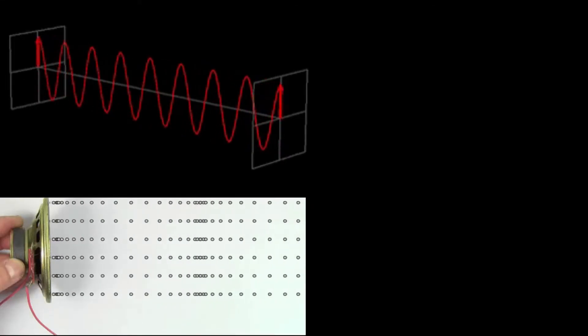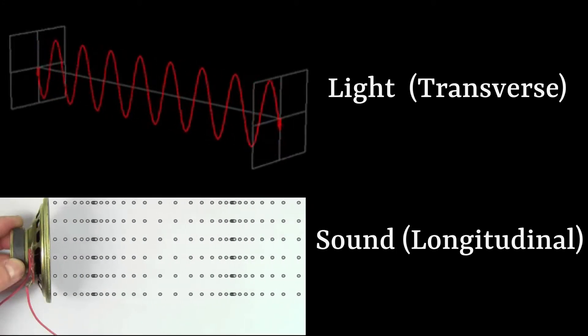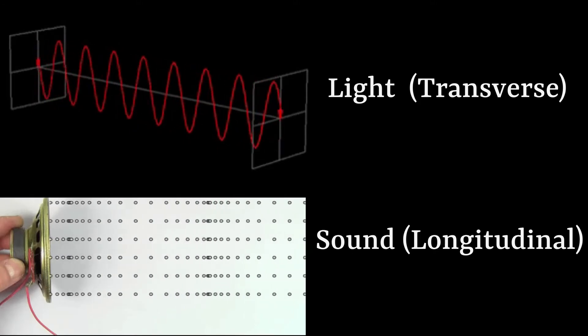Everything around us can be understood as a wave. Light is a transverse wave. Sound is a longitudinal wave.